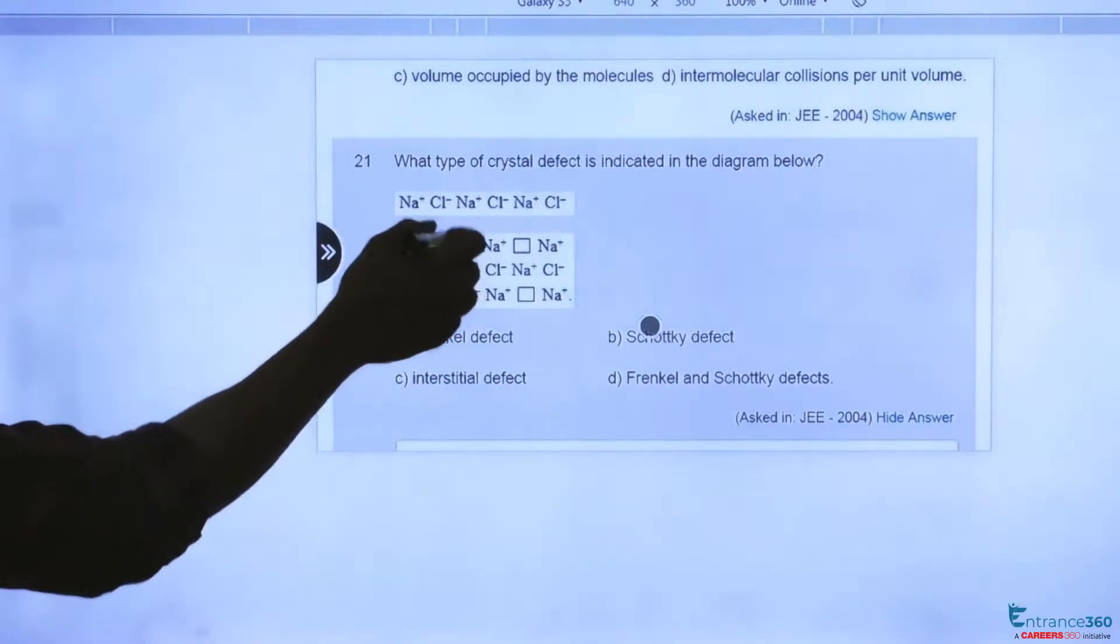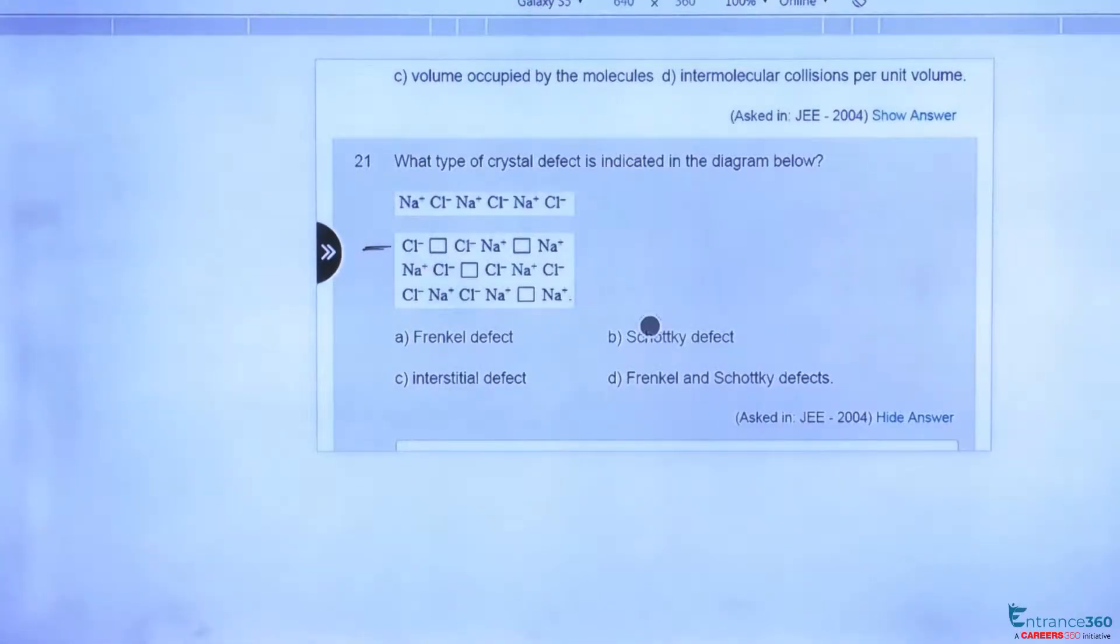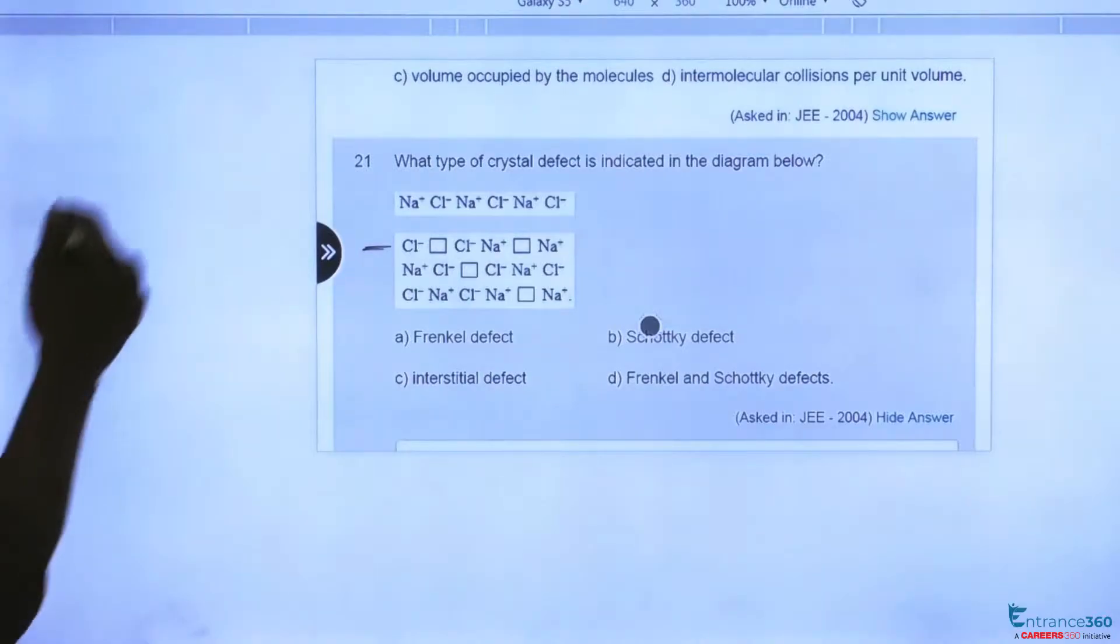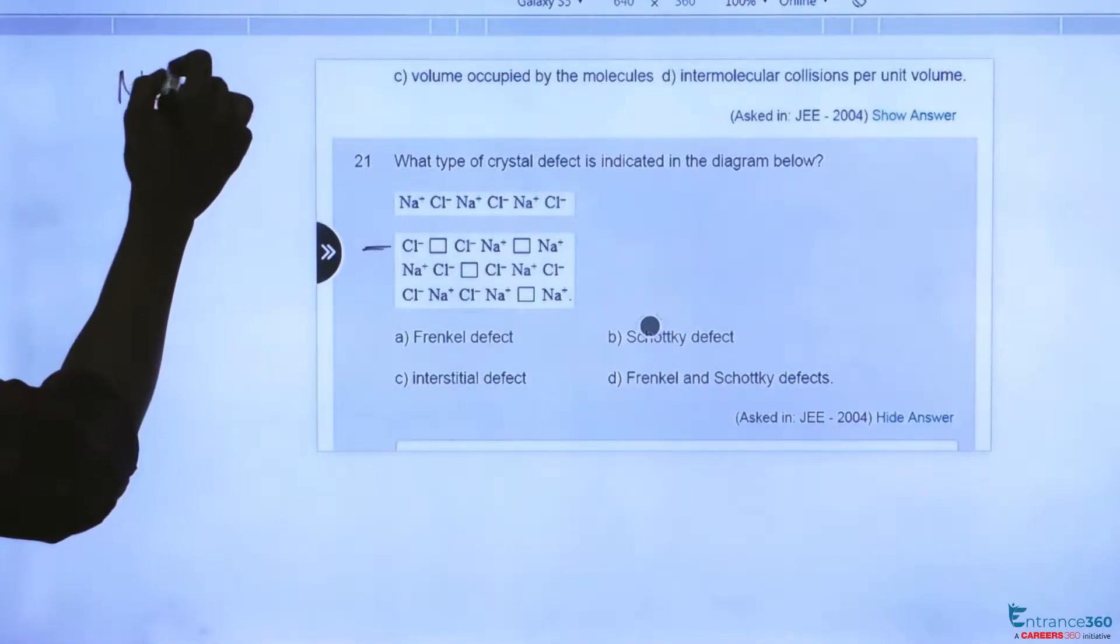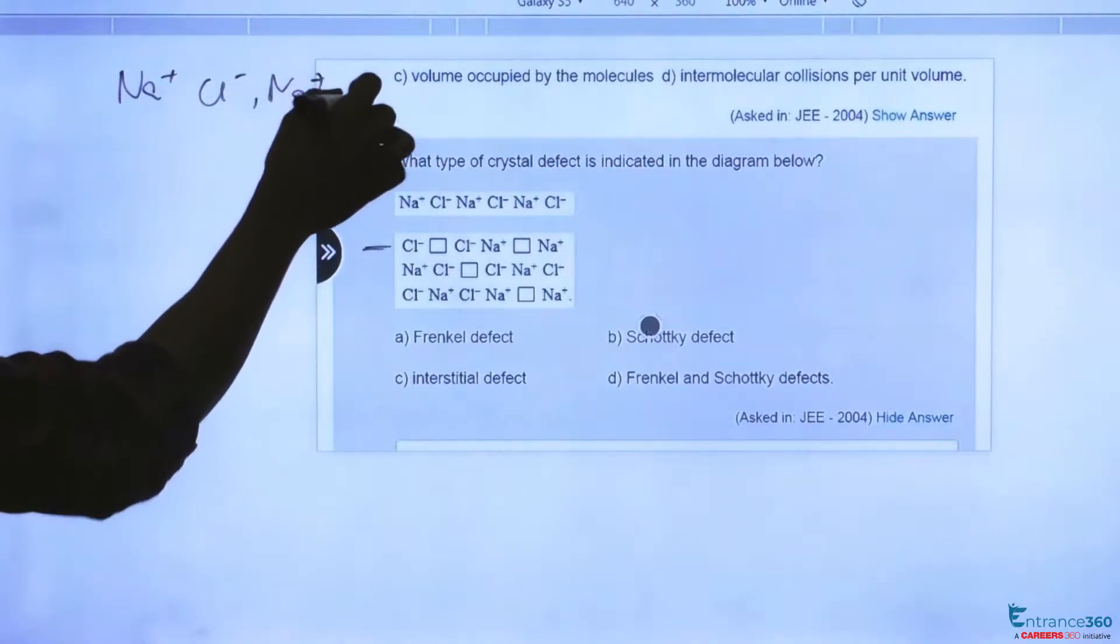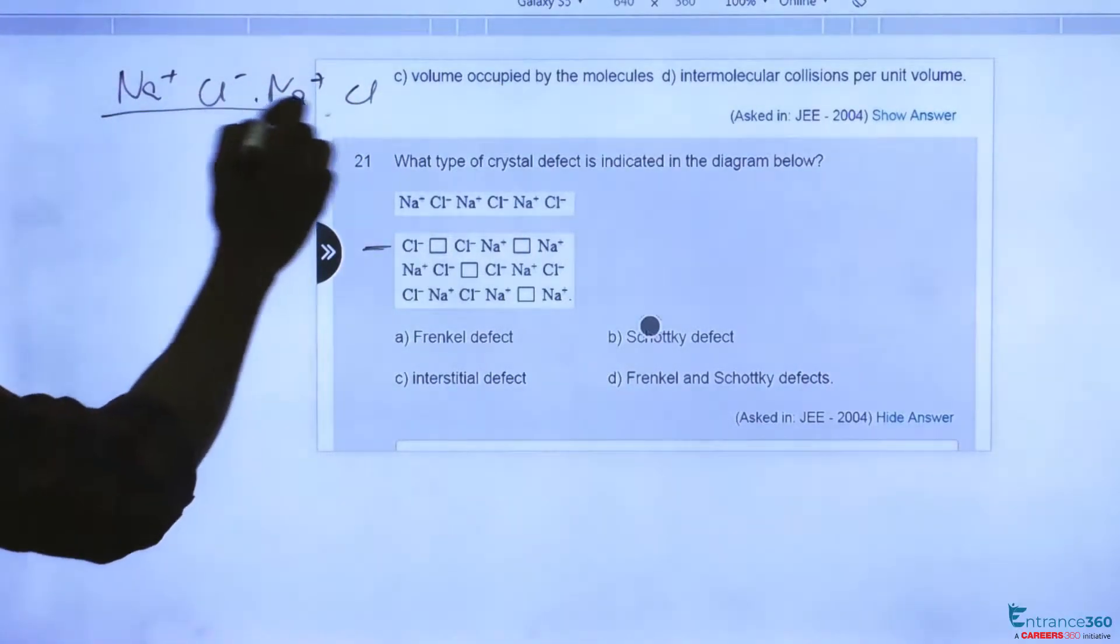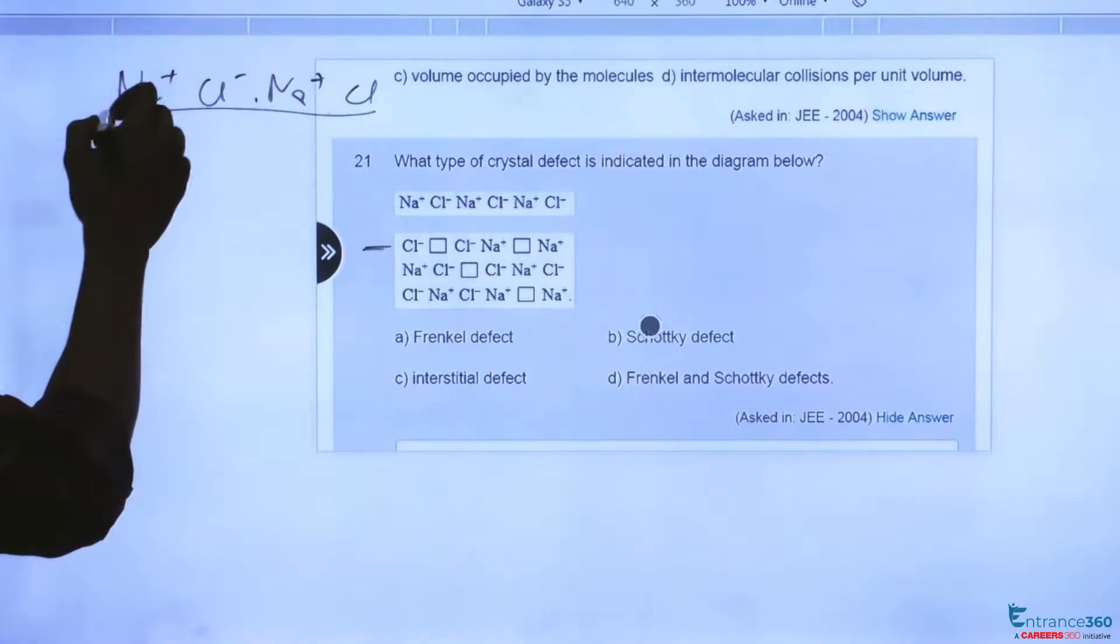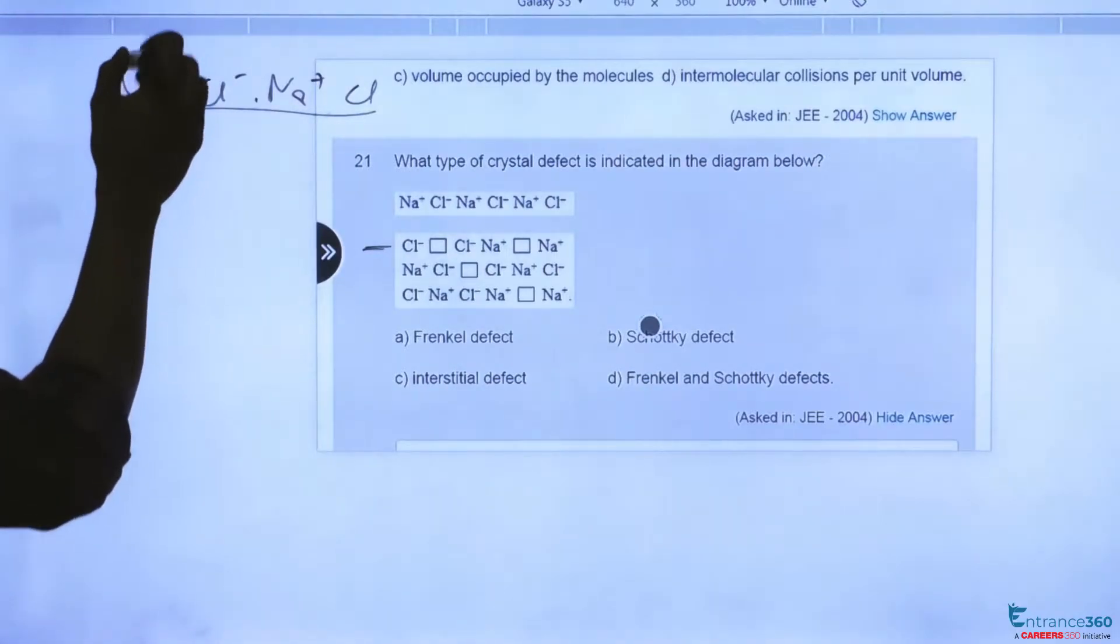We can also see a regular pattern of NaCl structure which says Na plus, Cl minus, Na plus, Cl minus. So this is the regular structure at alternate places - Na will be occupied and Cl will be occupied next to it.